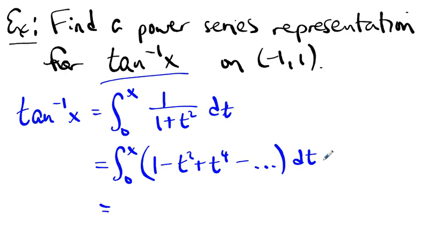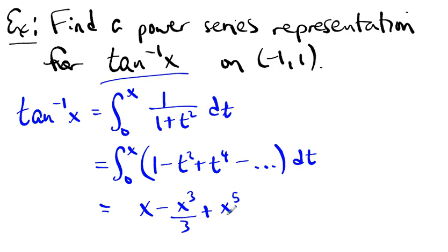The series for 1/(1+x²) is one minus t squared plus t to the fourth minus and so on. We're going to integrate this term by term from zero to x. Integrating term by term we get x minus x cubed over three plus x to the fifth over five minus and so on. We take the antiderivative, substitute in x, and then substitute in zero and subtract.